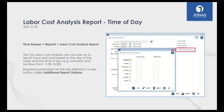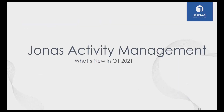The last Timekeeper enhancement is the Labor Cost Analysis report. We've given you the extra ability to run this report for certain days of the week and certain times as well. For example, you can run the labor cost analysis for Saturday and Sunday from 11 AM to 4 PM, or any time range of your choosing.